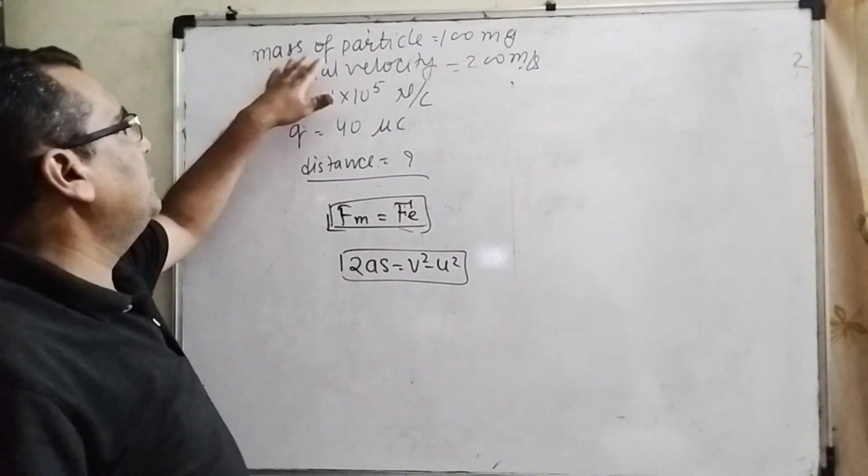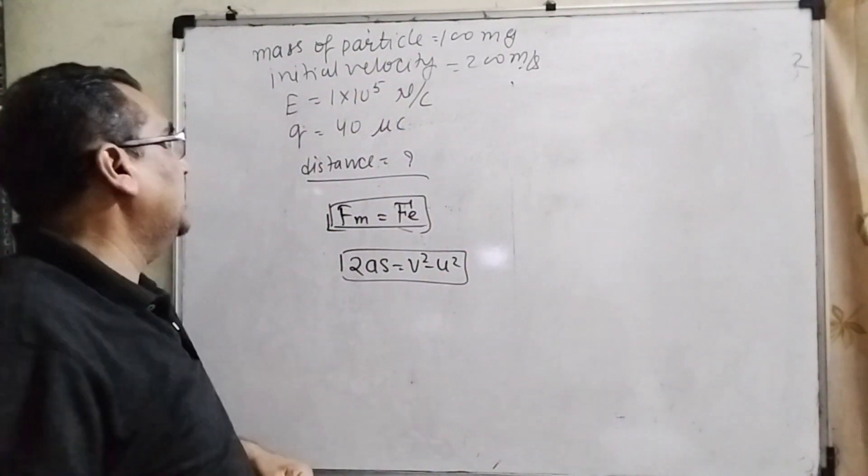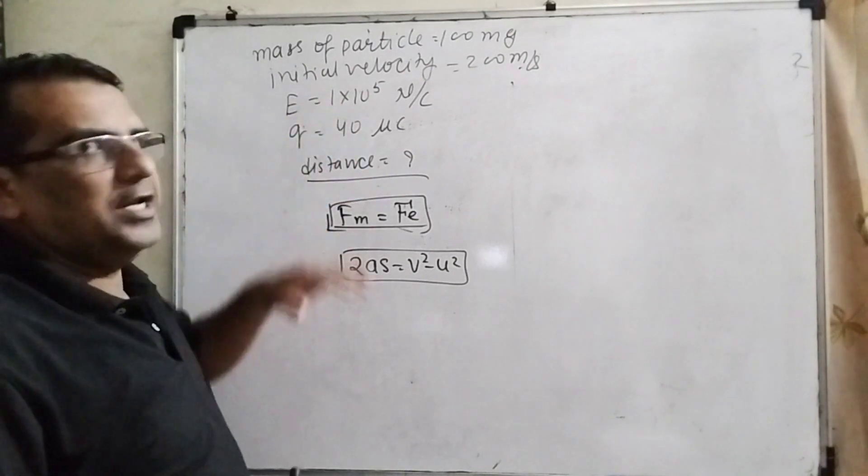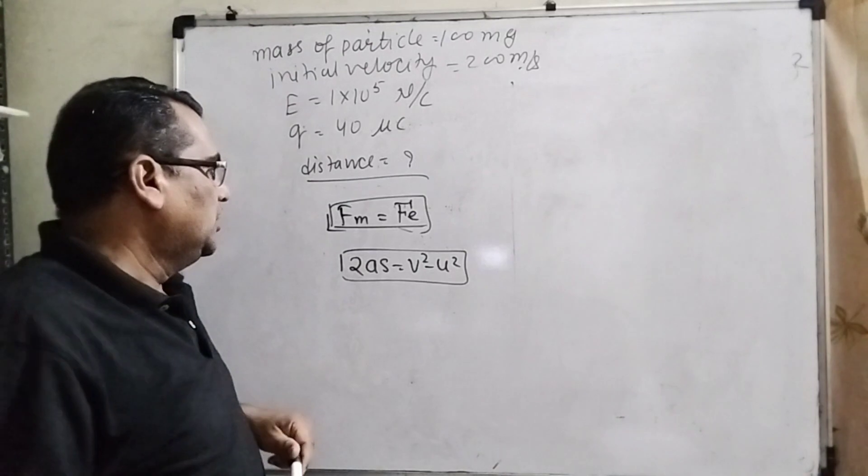We are given: the mass of the particle is 100 milligrams, initial velocity is 200 meters per second, electric field strength is 10^5 Newton per coulomb, and charge is 40 micro coulomb.